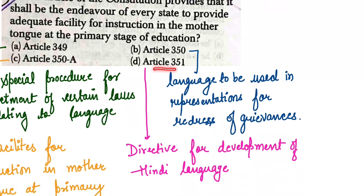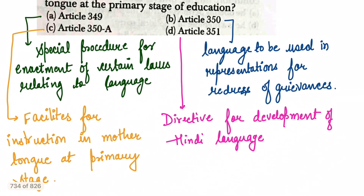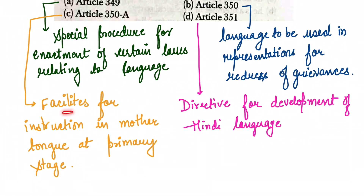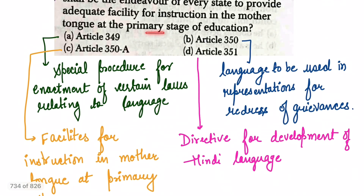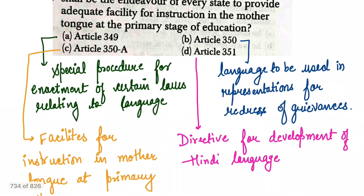Article 351 is for the development of the Hindi language. Then there is Article 350-A, which provides facilities for instruction in the mother tongue at the primary stage. Since the question asks about instruction given in the mother tongue, the answer is Article 350-A.